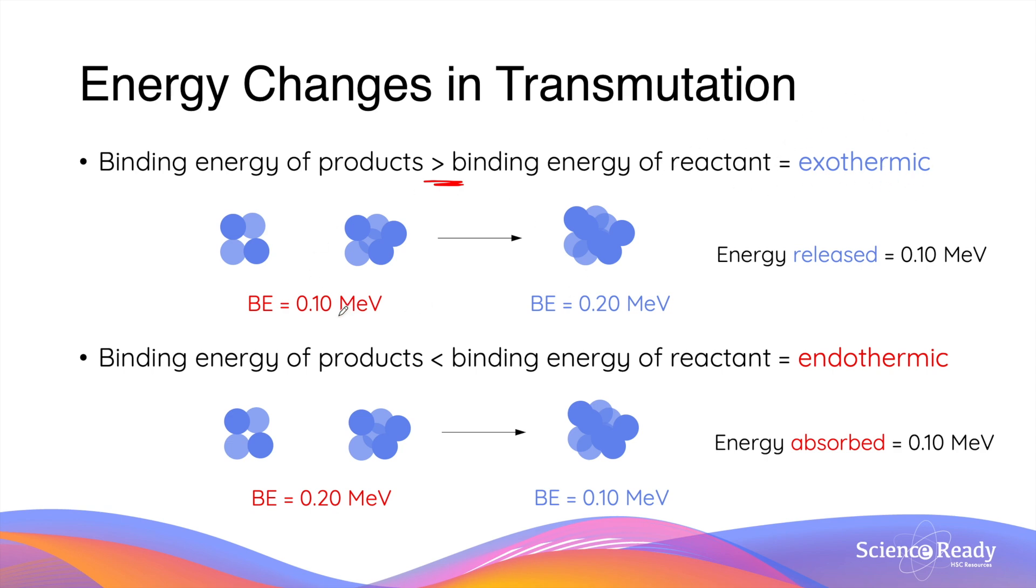In this example, the binding energies of these two nuclides combined is 0.1 MeV, while the product formed from the fusion of these two nuclides is 0.2 MeV. 0.1 MeV of binding energy means we need to put in 0.1 MeV to break apart the nucleons in these two nuclides before we can form the product.